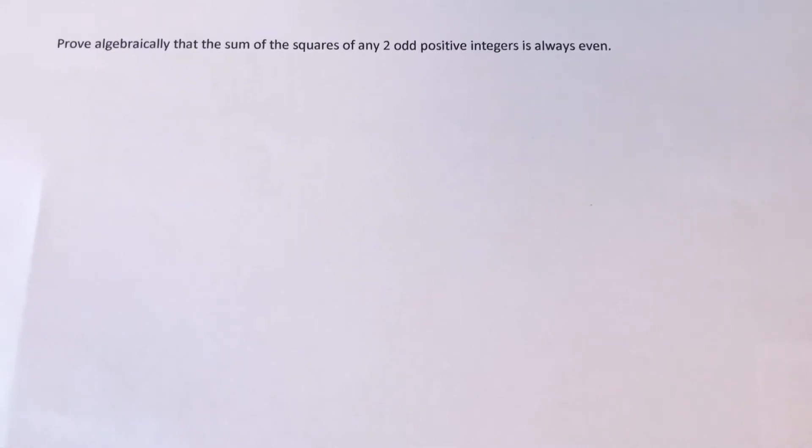Hi guys, welcome back. This is Maths3000. Today I'm going to prove algebraically that the sum of the squares of any two odd positive integers is always even.